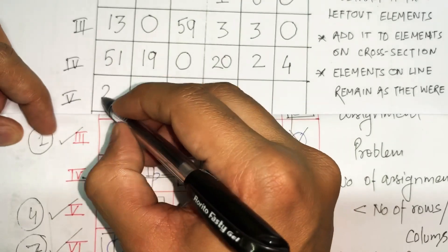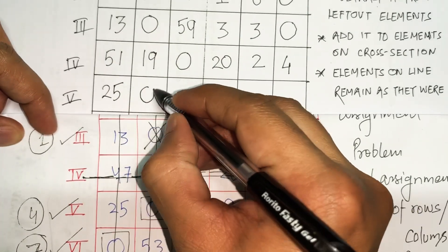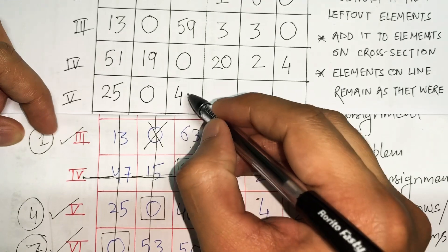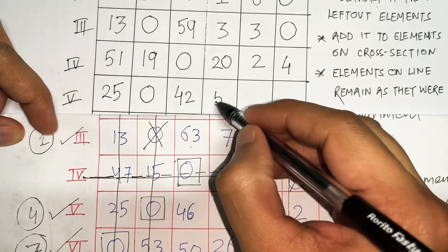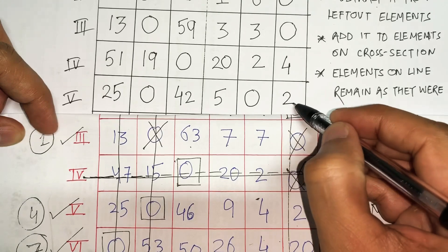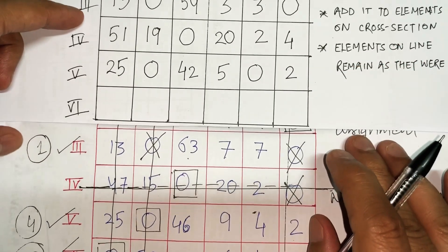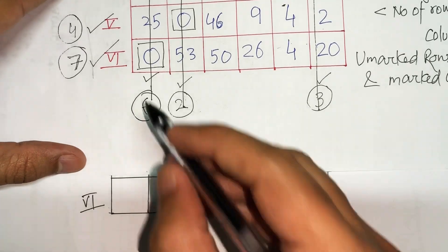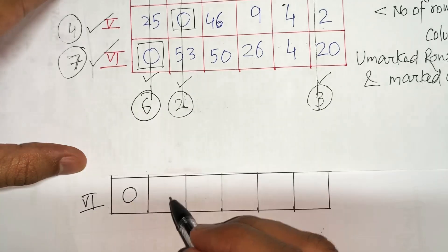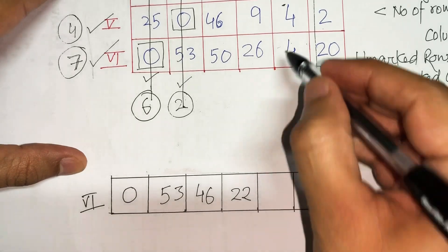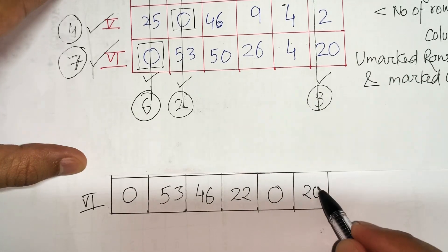Fifth row: 25 is on-line — as it is; 0 is on-line — as it is. 46 is left-out — 4 should be subtracted. 9 minus 4 because it is left-out. 5: 4 minus 4 is 0 — it was also the minimum element. 2 is on-line as it is. Last row: 0 on-line as it is; 53 on-line as it is; 50 minus 4 becomes 46; 26 minus 4 becomes 22; 4 minus 4 becomes 0; 20 on-line remains as it is.